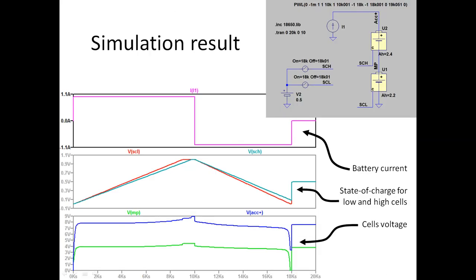First, we charge our battery from zero condition with constant current. The battery cells are different — they have different capacitance, so they charge slightly differently. Then we apply to the state of charge pin a particular voltage of 0.5, which means 50% of charge, and our cells immediately jump into the 50% state of charge condition.